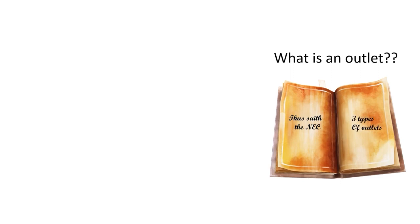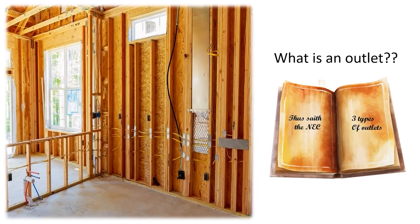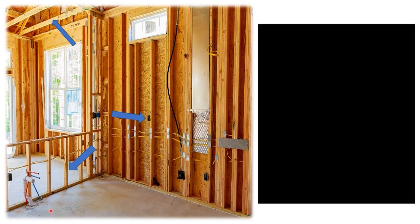Today we're going to learn about the three main types of outlets. Let's imagine we're in this kitchen. The first one is going to be located here, the second one here. If you pay close attention, there is a wire being stubbed up on the other side of this stud — it's looped up here until they get ready to put on the drywall. The third type of outlet is going to be up here in the ceiling.